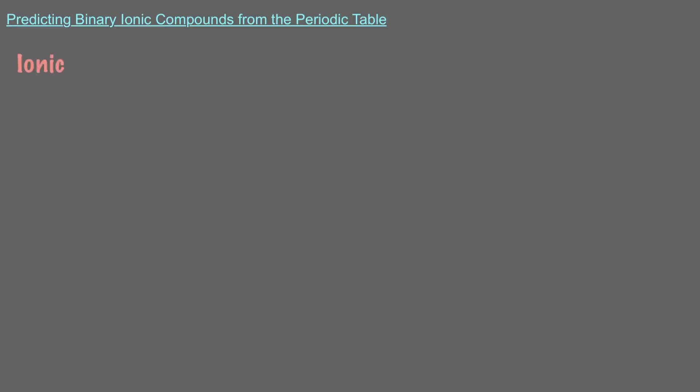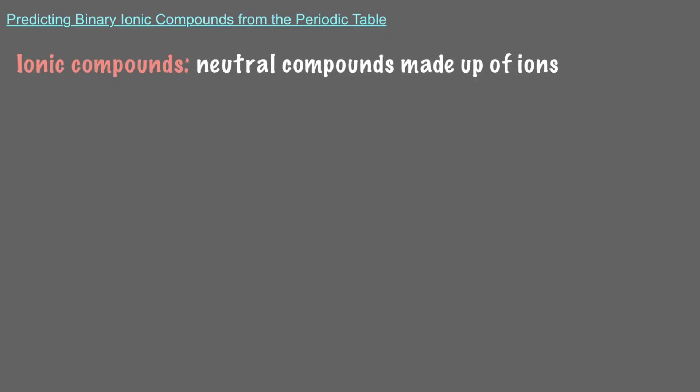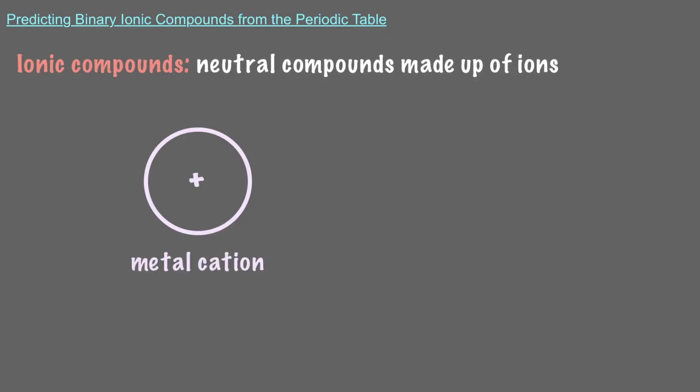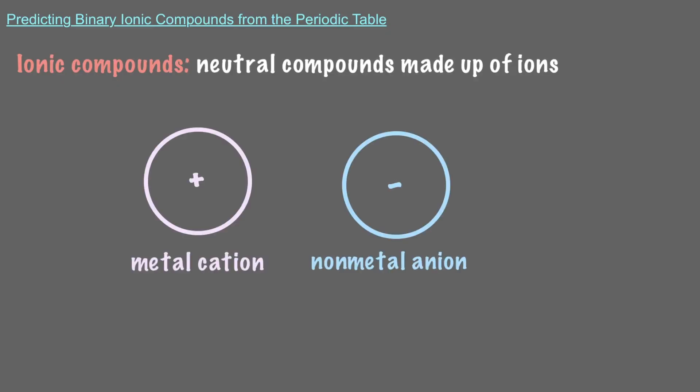In this video, we will learn how to predict binary ionic compounds based on where certain elements are located on the periodic table. Ionic compounds, as the name implies, are neutral compounds made up of ions — one metal cation and one nonmetal anion.